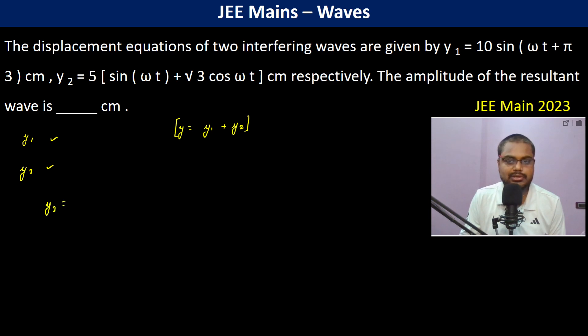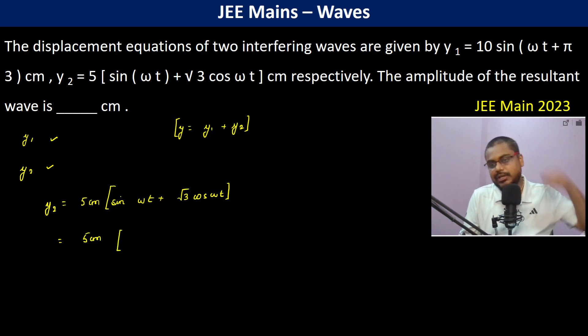y₂ is 5 centimeter sine of ωt plus √3 cos ωt. Now since both sine and cos terms are involved here, we will reduce it to either sine or cos. So this is going to be 5 centimeter...